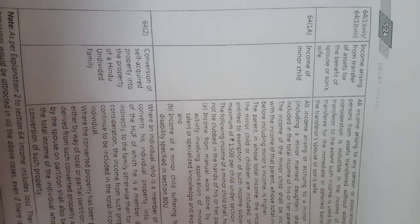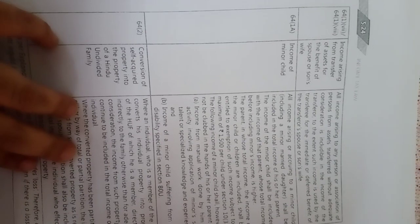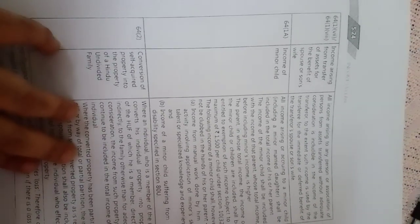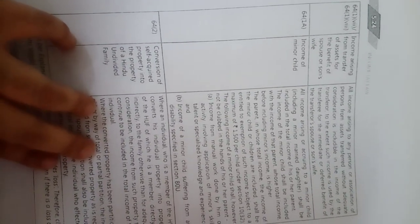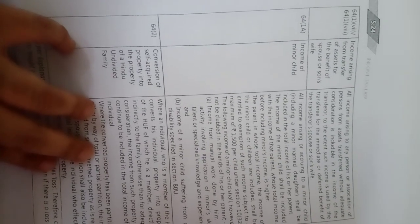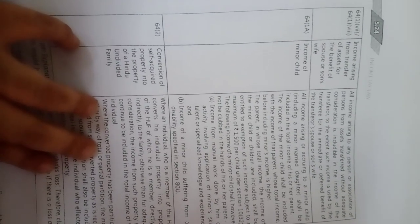Section 64(1)(7) and (8): income arising from transfer of assets for the benefit of spouse or son's wife — without adequate consideration and for the benefit of spouse or son's wife — will be considered as the income of the transferor.